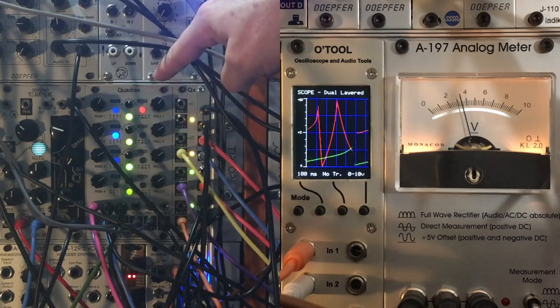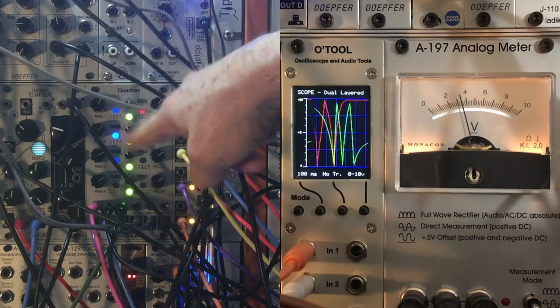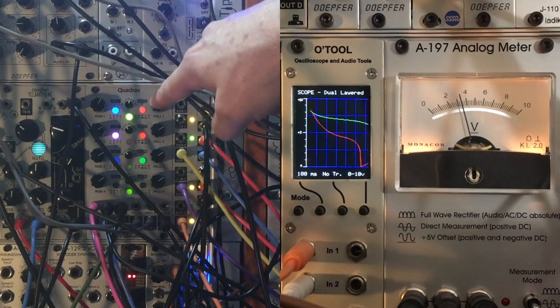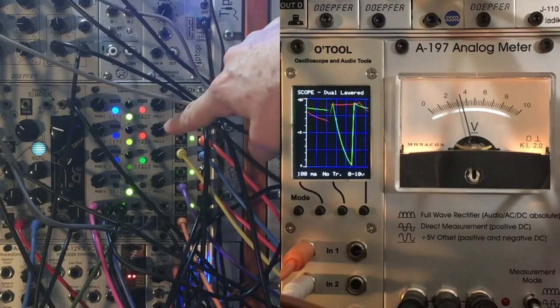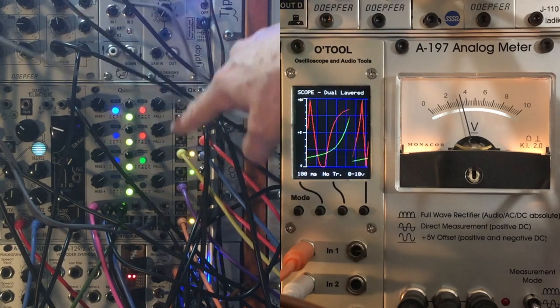So if I put the quadrax into CV mode, I can see that three incoming CVs are being used to control it. And if I click on A, then I can see that A is coming in and it's controlling rise and fall. Just like we saw in the last video with the melody Krel.